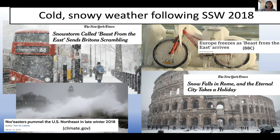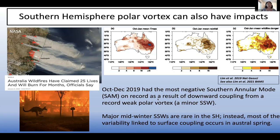The 2018 sudden warming event is a well-known example — it had such big impacts in Europe that they named the storm 'Beast from the East.' There were a number of storms, not just that one, following the sudden warming, and also about four nor'easters that March that came across the North Atlantic due to the strong blocking pattern over Greenland associated with the negative NAO. The northern hemisphere isn't the only one influenced by the polar vortex — the southern hemisphere has a polar vortex too, though major mid-winter SSWs are rare there due to less planetary-scale wave forcing.